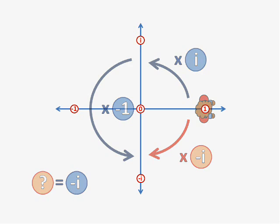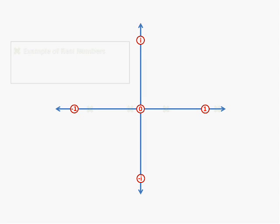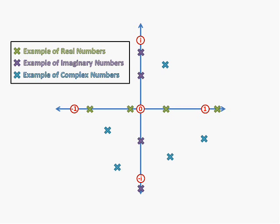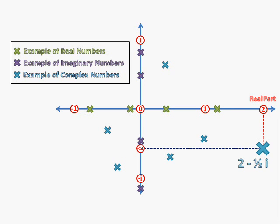Now some more maths jargon. A number which lies on the normal number line, i.e. a negative, zero or positive number, is known as a real number. A number which is just some multiple of i, is an imaginary number. And a number, which is the sum of both a real number and an imaginary number, is known as a complex number. For example, 2 minus a half i would be a complex number. It has a real part of 2, and an imaginary part of minus a half.